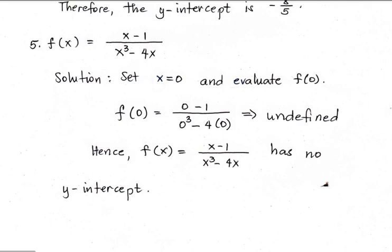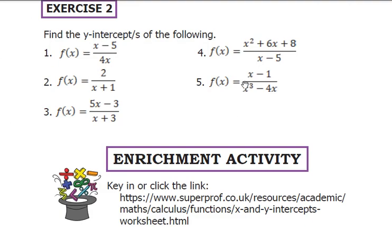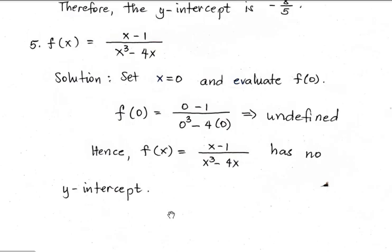Number 5 — the last: f(x) equals (x minus 1) all over (x cubed minus 4x). When substituting x equals 0, we get a constant numerator with a 0 denominator, giving us an undefined result. So the graph of this function will not touch the y-axis — hence, this function has no y-intercept.